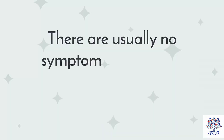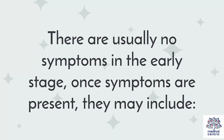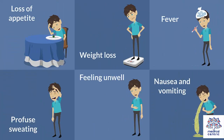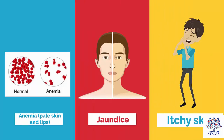There are usually no symptoms in the early stage. Once symptoms are present, they may include abdominal pain or discomfort, usually on the upper right portion of the abdomen, loss of appetite, weight loss, fever, profuse sweating, feeling unwell, nausea and vomiting, anemia with pale skin and lips, jaundice, and itchy skin.